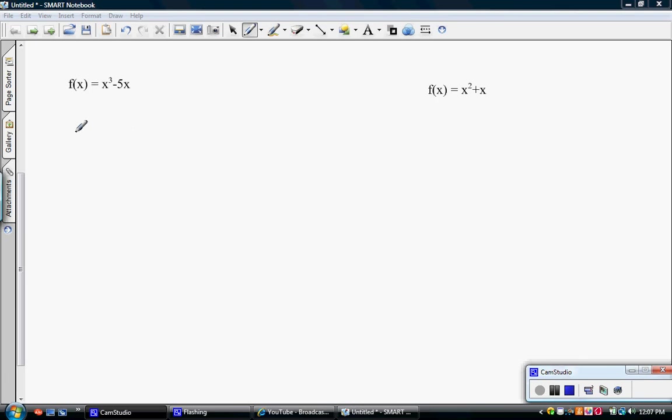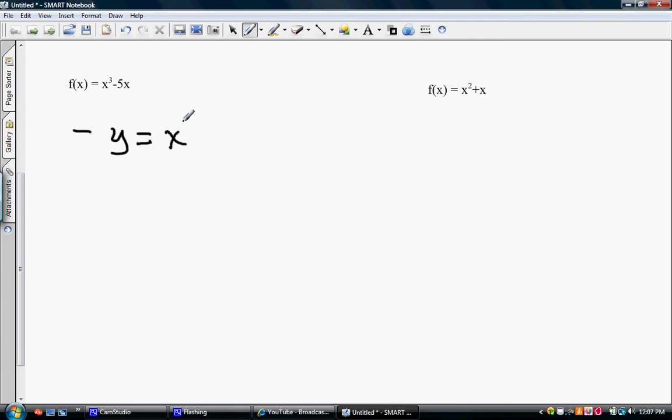F of x becomes negative y. The x's don't change at all. Remember, when we're testing for x, the x's don't change, it's the y's that change. We'll multiply through by the negative to get y by itself.